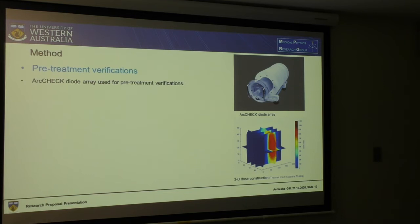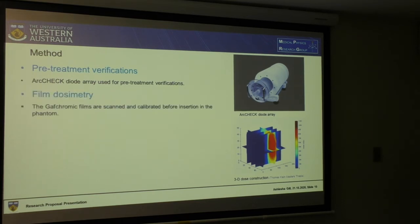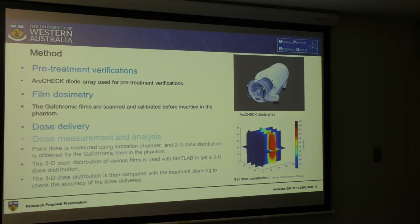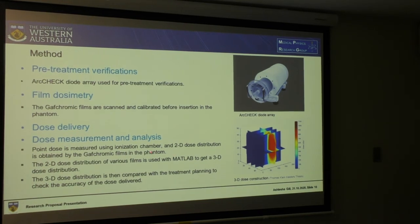Next is pre-treatment verification, for which we will use ArcCheck because it gives good 3D dose verification. For film dosimetry, we need to scan and calibrate the GAF-chromic films. After dose delivery, we perform dose measurement and analysis using an ionization chamber for point dose and films for 2D dose distribution. We will then use MATLAB to interpolate the 2D dose distributions on multiple films to get a 3D dose distribution, which can be compared with the treatment planning system using gamma analysis.